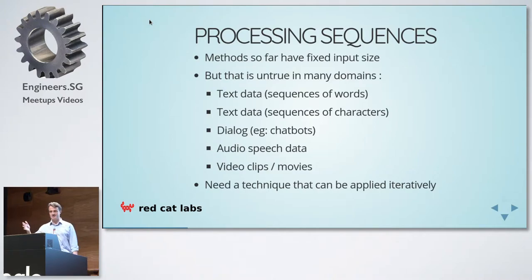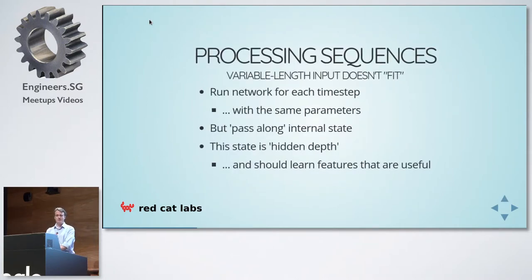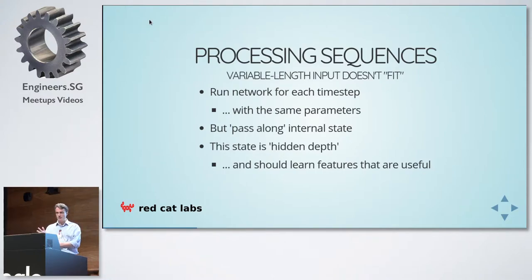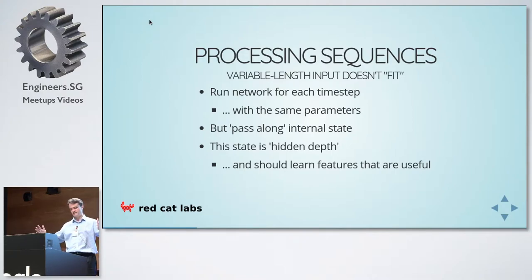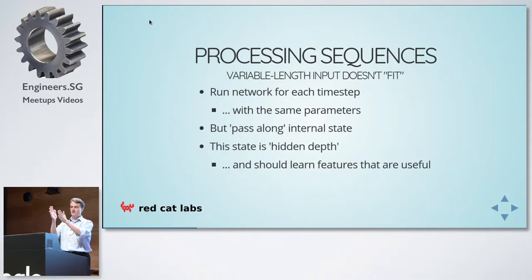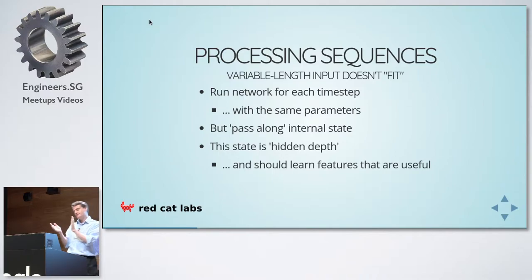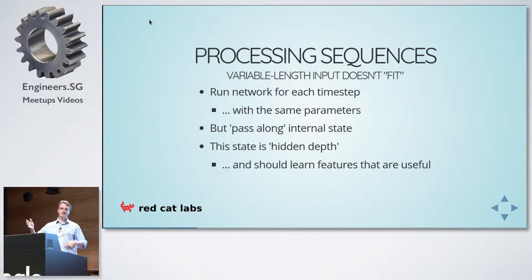For processing sequences, variable-length input doesn't fit the models we've had before. What you want to do is run a network on the inputs at a given time step, and that same network is used at the next time step and the next. It's all very well processing these as independent events, but the whole point of a sequence is that they're linked together. So you pass along a hidden state from one network to the next — the output feeds into the hidden state of the following one, and on and on. The trick is that this is all the same network, just used repeatedly.